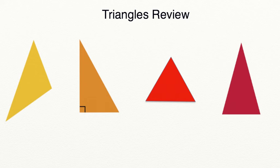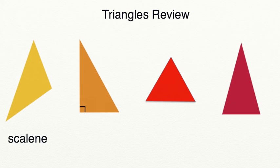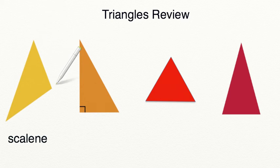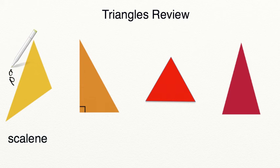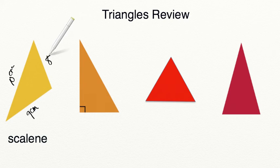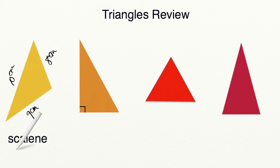Let's begin today using the diagrams below to identify these four different types of triangles. We are going to start with this yellow triangle all the way to the left. This yellow triangle is called a scalene triangle. A scalene triangle is a triangle that has three sides that are all different lengths and three angles that are all different. For example, this side of the triangle might be ten centimeters long, whereas this side might only be nine centimeters long, and this side might be eight centimeters long. Since each side is a different length, that means that it's a scalene triangle.